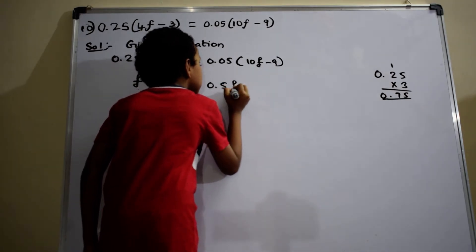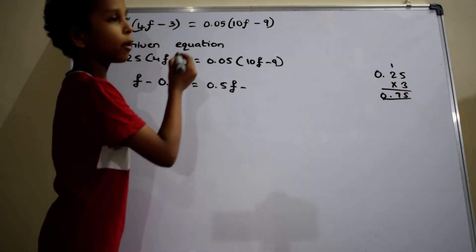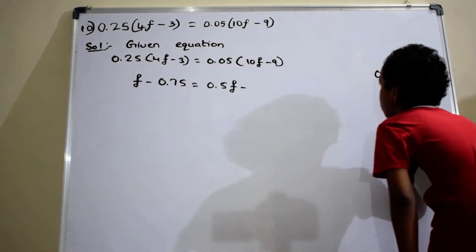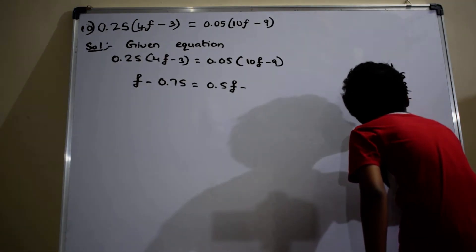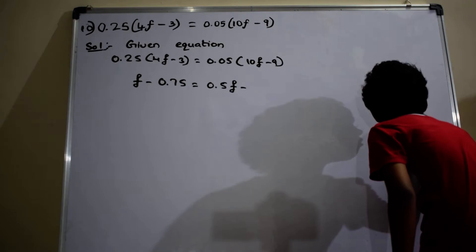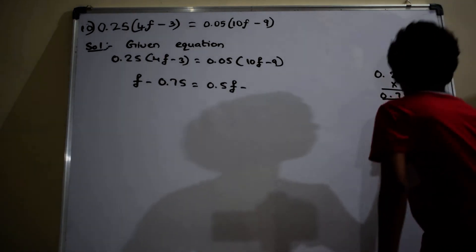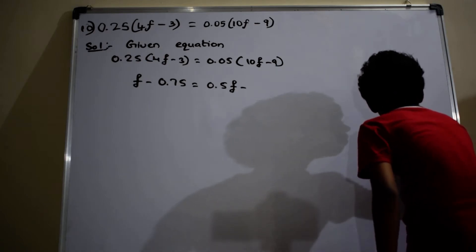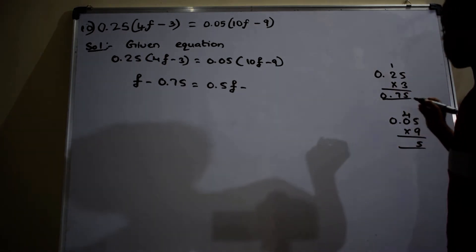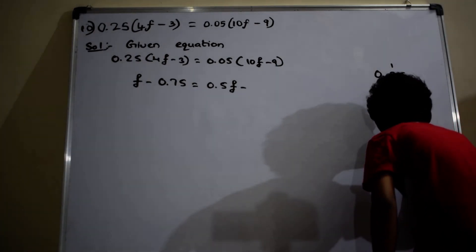Equals to 0.05 into 10f equals 0.5f, minus 0.05 into 9. 9 into 5 is 45. 9 into 0 is 0, 0 plus 4 is 4.